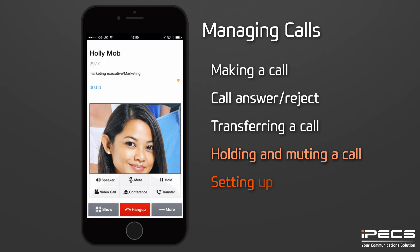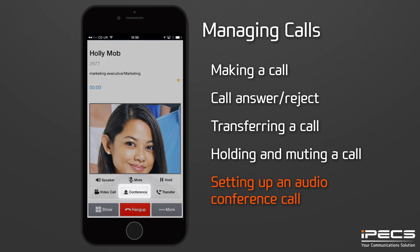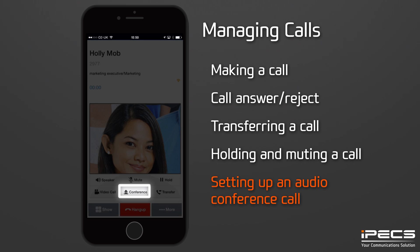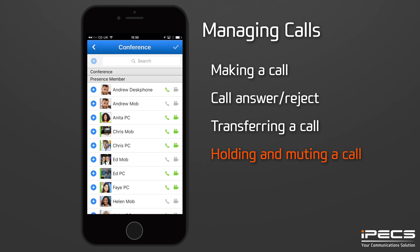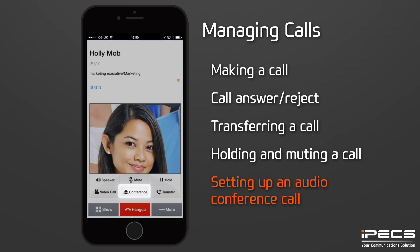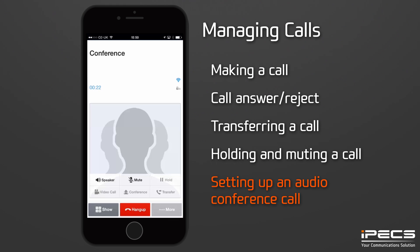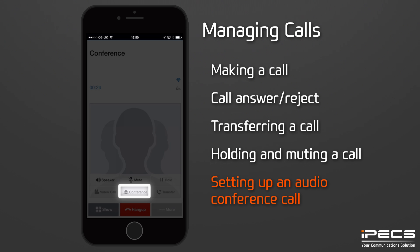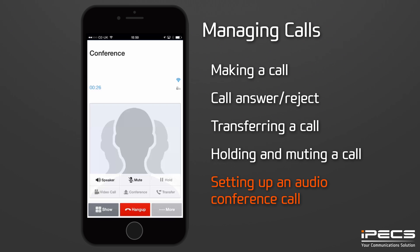You can use IPEX UCS to set up a multi-party conference call. Make or receive a call as normal using the dial pad or contact menu. Then press the Conference button. Place the second call, then press the Conference button again. To add additional parties, repeat these steps. Once all the calls have been established, press the Conference button again to connect all parties.